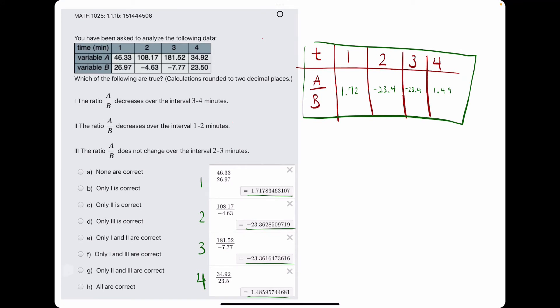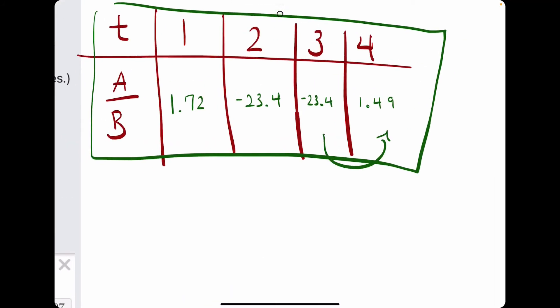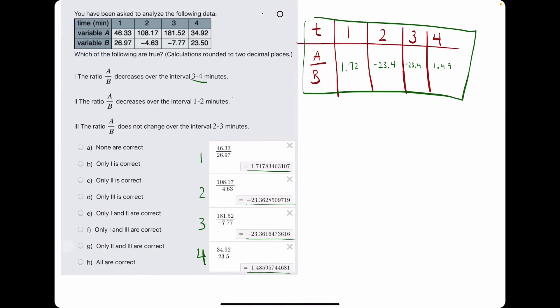So they say the ratio decreases on the interval 3 to 4. So we look from 3 to 4, and we ask ourselves, does that decrease from negative 23.4 to 1.49? Of course not, that is an increase in value from negative 23 to 1.49, so that is false.